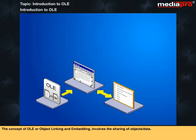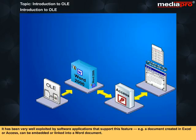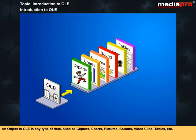The concept of OLE, or Object Linking and Embedding, involves the sharing of objects or data across applications. OLE will work only if both concerned applications individually support OLE. It has been very well exploited by software applications that support this feature — for example, a document created in Excel or Access can be embedded or linked into a Word document. An object in OLE is any type of data such as clip arts, charts, pictures, sounds, video clips, tables, etc.